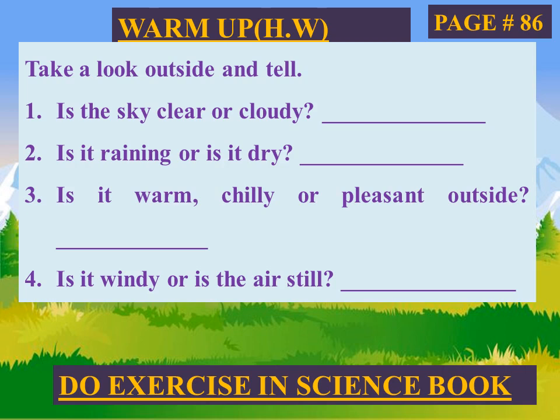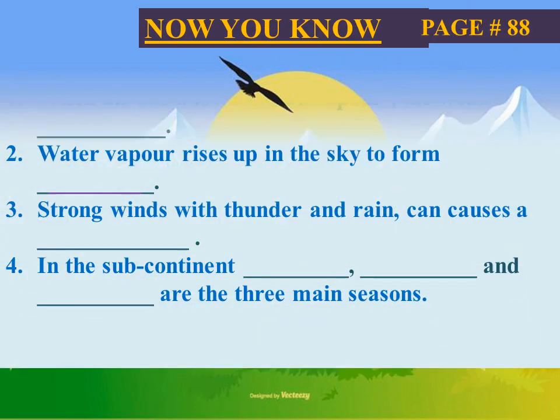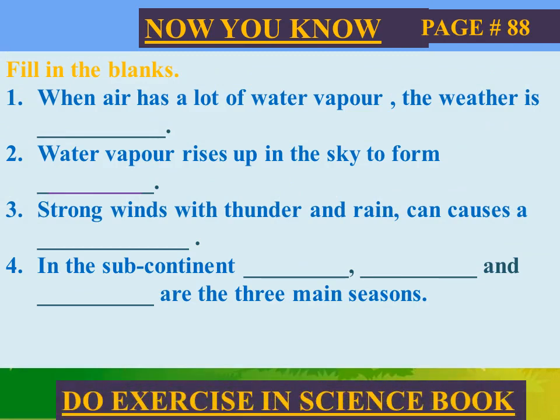Students, come to page number 88. Now fill in the blanks. Number one: when air has a lot of water vapor, the weather is humidity. Jab hawa mein bohut saada water vapor ho to mausam humidity wala hota hai, yani ki namhi wala hota hai. Number two: water vapor rises up in the sky to form clouds — answer is clouds.